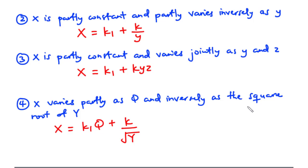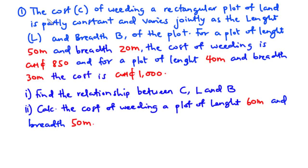Now let's solve an example. The cost C of weeding a rectangular plot of land is partly constant and varies jointly as the length L and breadth B of the plot. For a plot of length 50 meters and breadth 20 meters the cost of weeding is 850 Ghana cedis, and for a plot of length 40 meters and breadth 30 meters the cost is 1000 Ghana cedis. We will find the relationship between C, L, and B, and then calculate the cost of weeding a plot of length 60 meters and breadth 50 meters.